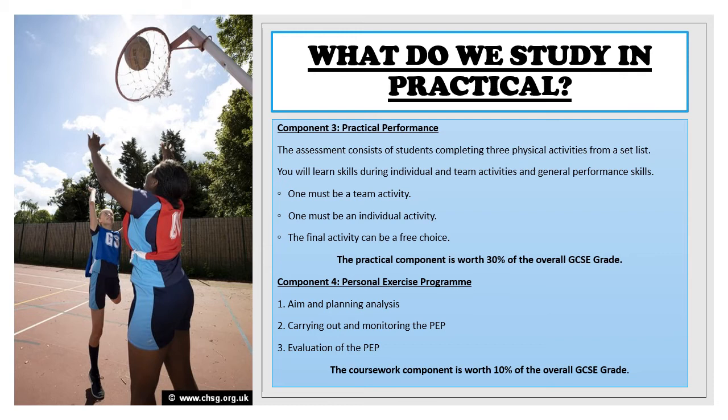Component 4 is coursework — the personal exercise programme. This is based on your main sport. You will create and run a six-week training programme in order to improve your performance in your main sport. The coursework component is worth 10% of your overall GCSE grade.